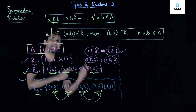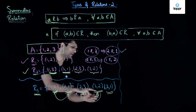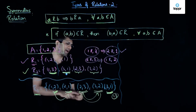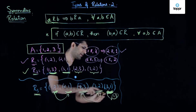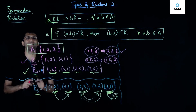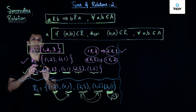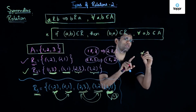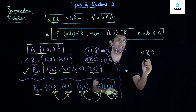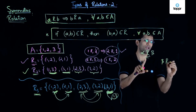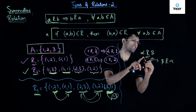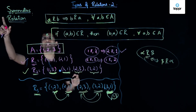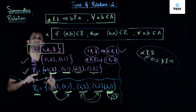However, when we check the next ordered pair involving 3 and 1, we find (3,1) is present but (1,3) is missing. Because (1,3) is missing, (3,1) cannot imply (1,3), and so R3 is not a symmetric relation on set A. In summary, for a relation to be symmetric, if alpha is related to beta under R, then beta must also be related to alpha; if any one of these implications fails, the relation is not symmetric.